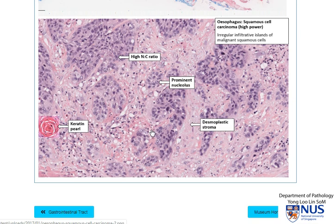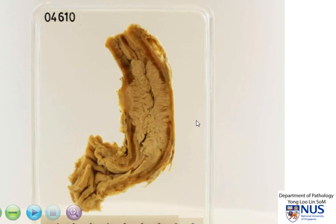So here is an example of squamous cell carcinoma of the esophagus. In summary, we are looking at a mucosal tumor, which is therefore a carcinoma of the mid to distal part of the esophagus, and this is causing marked luminal narrowing. On histology, the possible types would be squamous cell carcinoma and adenocarcinoma.